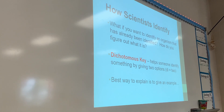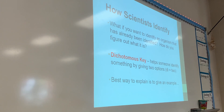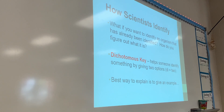A dichotomous key doesn't help us if something is brand new and has never been discovered before. But if it has been discovered before and we want to know what it is, we can use a dichotomous key. A dichotomous key helps someone identify something by giving them two options - 'di' for two. We're going to practice using dichotomous keys because it is a very important tool that scientists have developed. We're also going to be making our own, and the dichotomous key will be on a test.